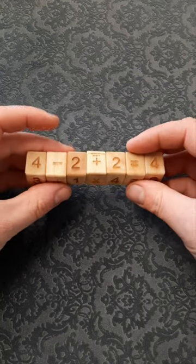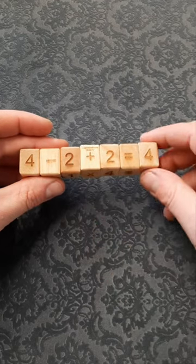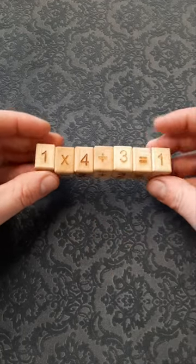So we've got seven wooden blocks. There's four with digits one through to four and then there's three with operational signs.